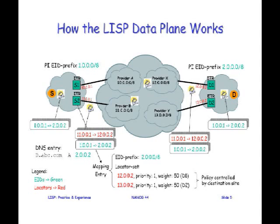In this example, there's a mapping entry in the ITR — S1 and S2 — it doesn't matter how it got it right now; it could have been static or learned through a mapping system. That mapping entry says: if you have this EID prefix — 2 slash 8 — then when encapsulating it, send it to routing locator 12.0.0.2 or 13.0.0.2 with priorities and weights. I'll explain that later, but basically either of the ITRs on the left side have that mapping.